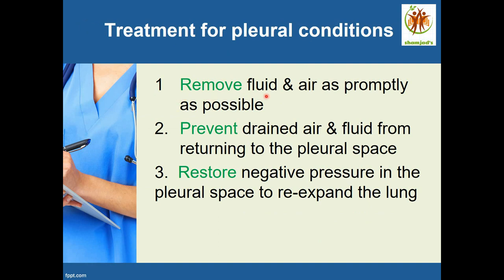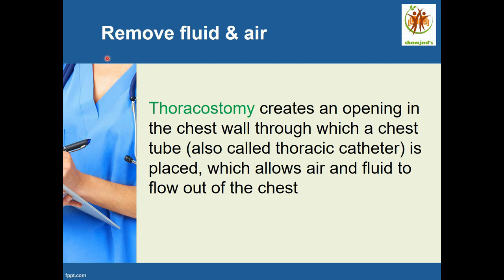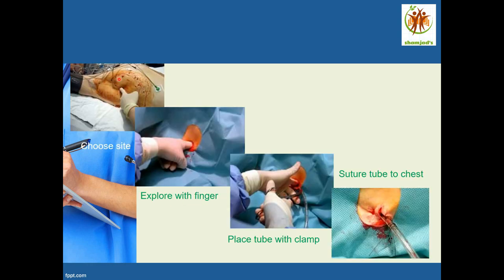The treatment of pleural conditions has three aims: first, remove fluid and air as promptly as possible; second, prevent drained air and fluid from returning to the pleural space; third, restore negative pressure in the pleural space to re-expand the lung. To achieve this, a thoracostomy creates an opening in the chest wall through which a chest tube — also called a thoracic catheter — is placed, allowing air and fluid to flow out.